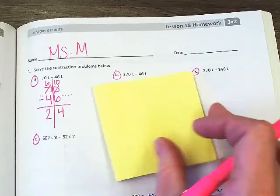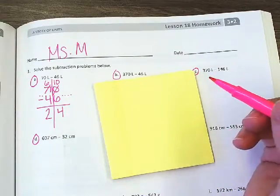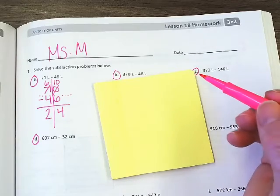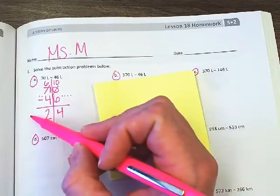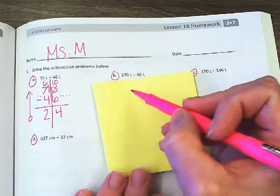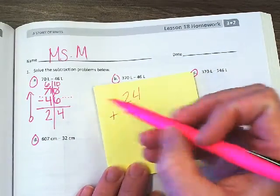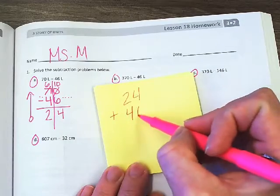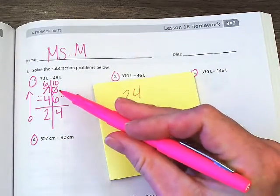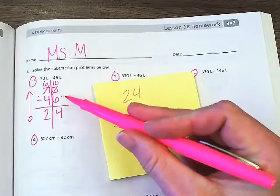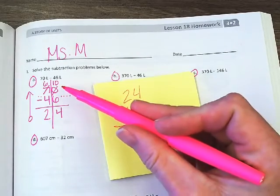Let's go ahead and check our work. How do we do that? What's the opposite of subtraction? The opposite of subtracting is addition. You got it. So we're going to start at the bottom and work our way up. 24 plus, right, the opposite, 46. And if we did it right, what should it equal? 70.